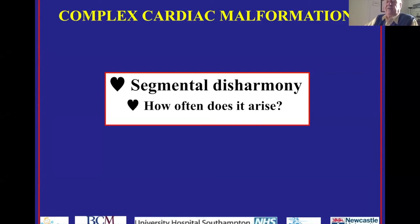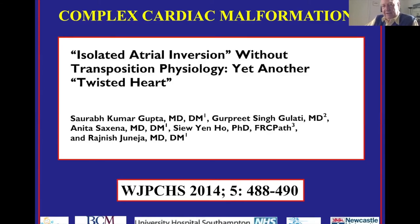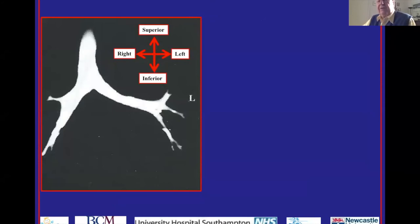Segmental disharmony is as rare as hen's teeth. Here is a heart I discussed at great length with Saurab Gupta, with whom I have become a very close collaborator, and which he described with Sue Yen Ho — who worked with me for very many years at the Royal Brompton and is still active there — in 2014 in the World Journal of Pediatric and Congenital Heart Surgery. They called it isolated atrial inversion, and here we are back to twisted hearts, though I disagree with their interpretation. It shows again why we need to analyze the segments separately from the way they are joined together.